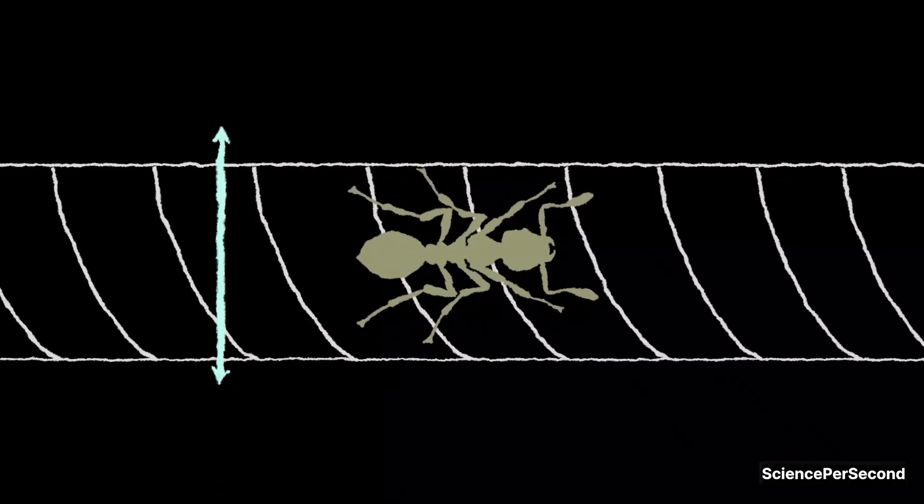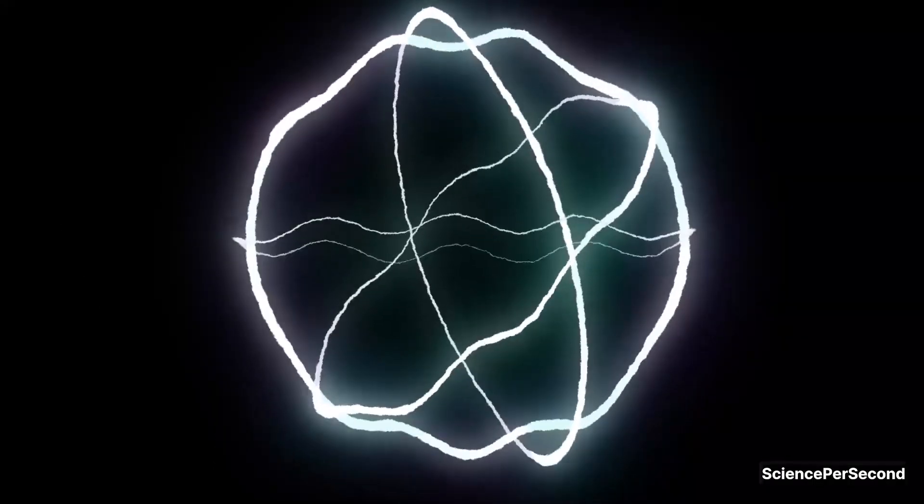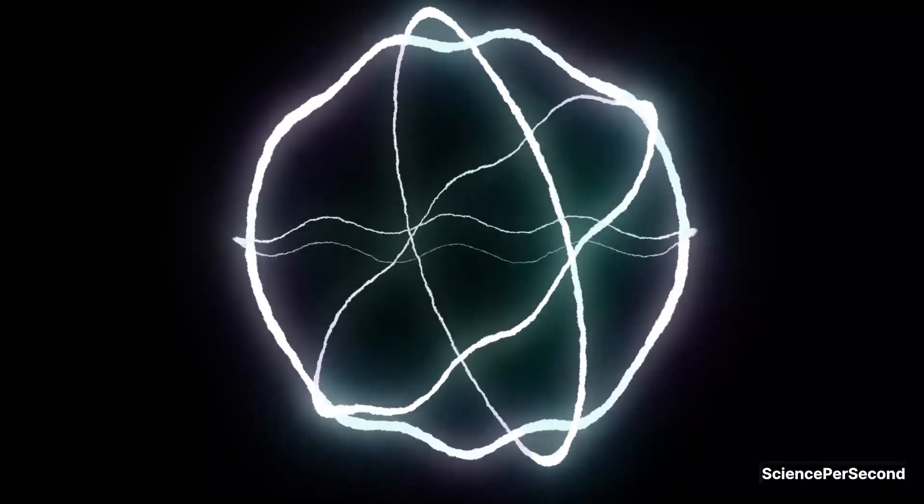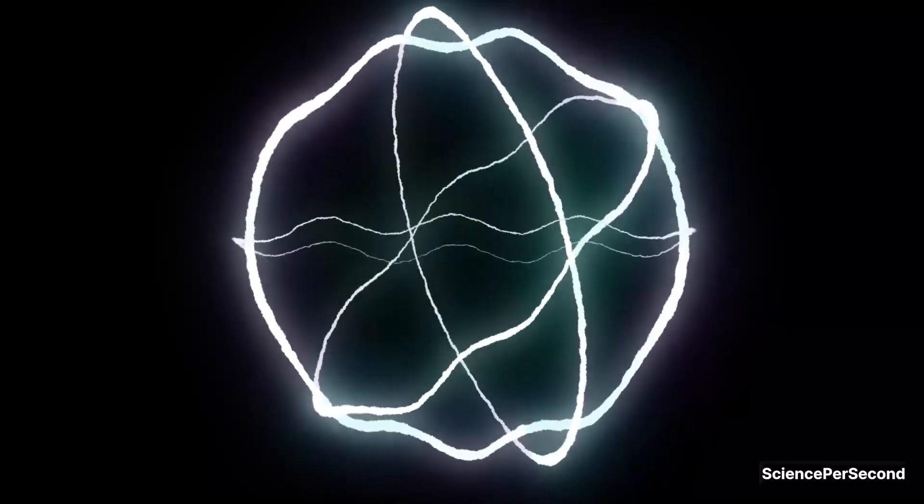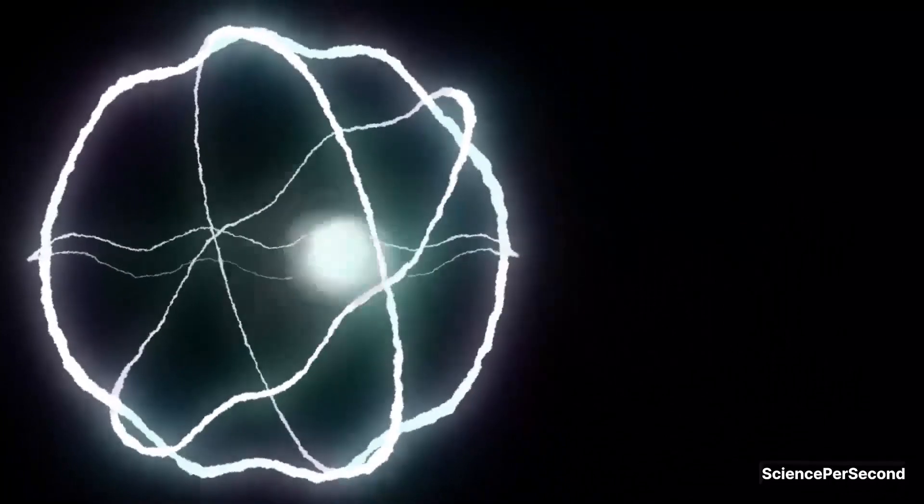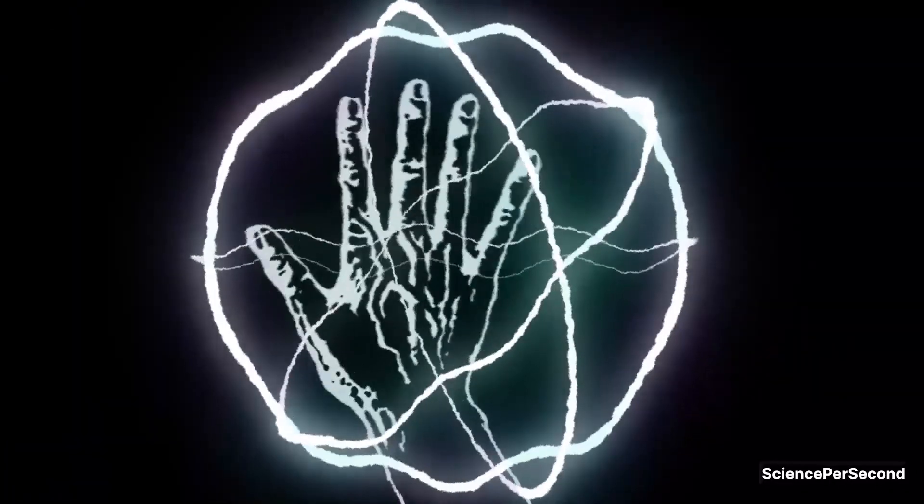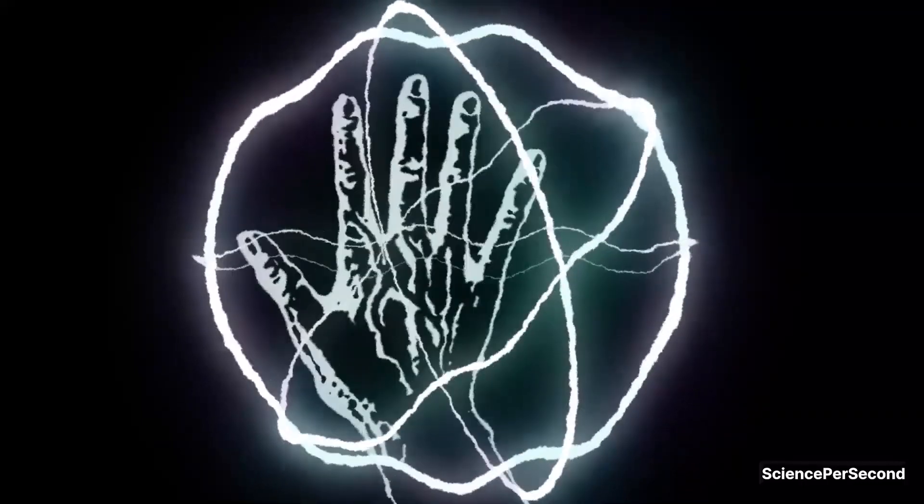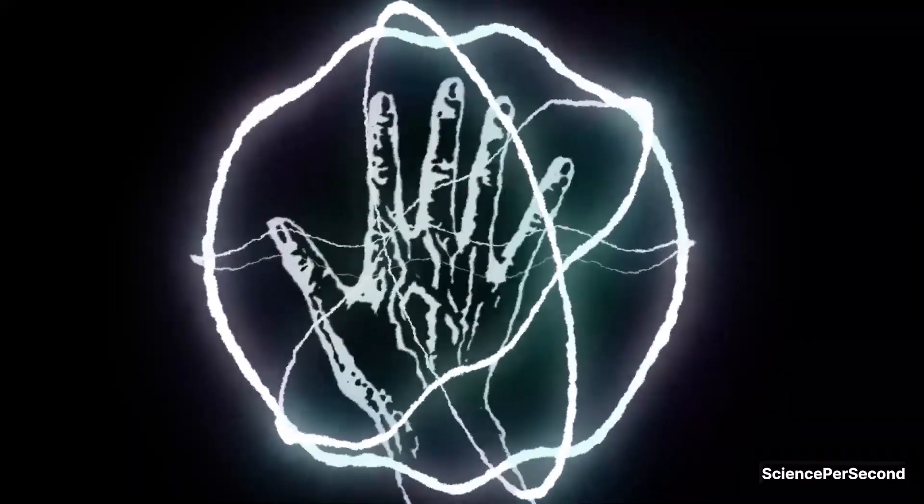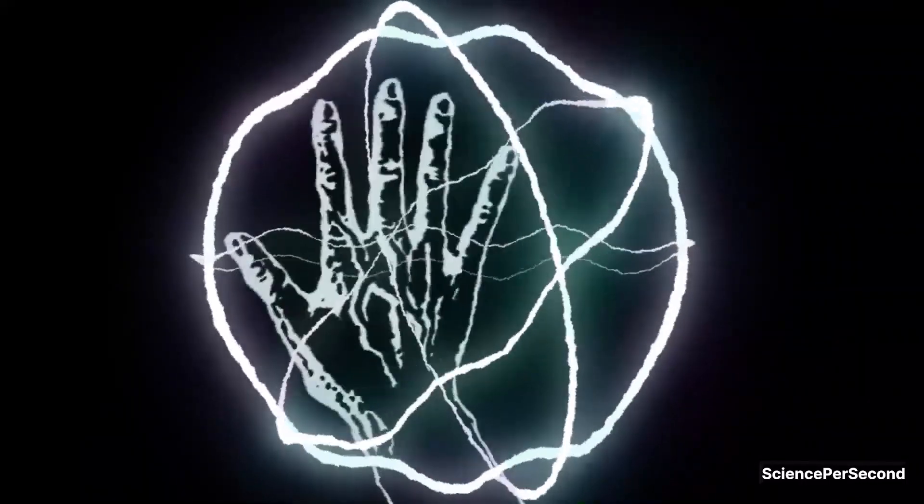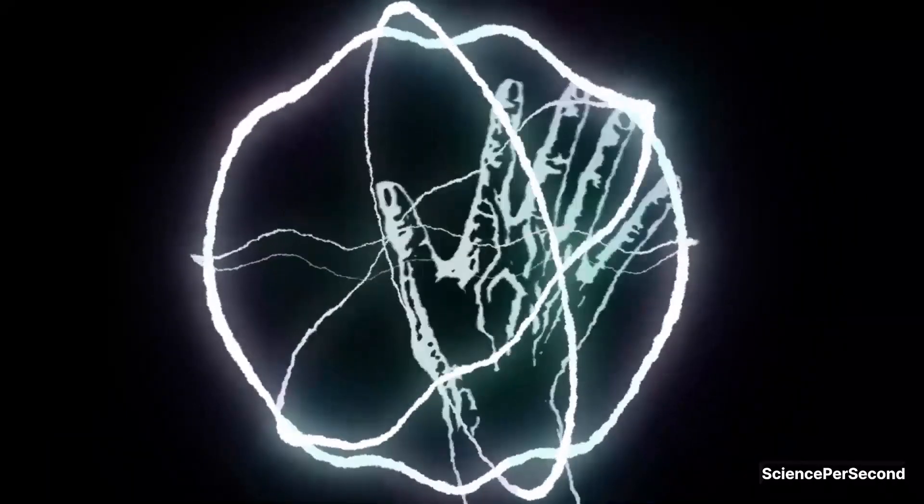According to string theory, extra dimensions are folded on top of each other and wrapped together in an interesting way. But these dimensions are accessible to some particles with high energy. When we move our hands in the air, we go around these dimensions many times, but they are so small that we cannot see them.